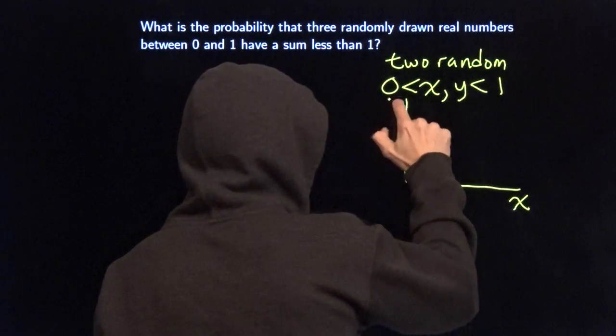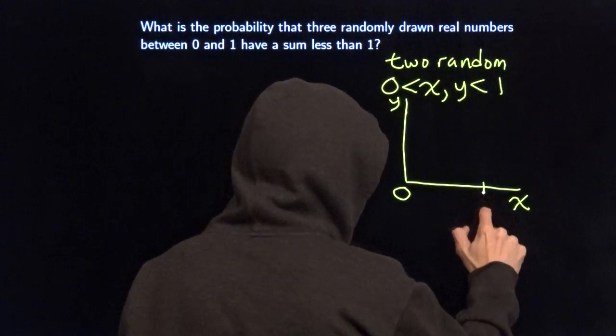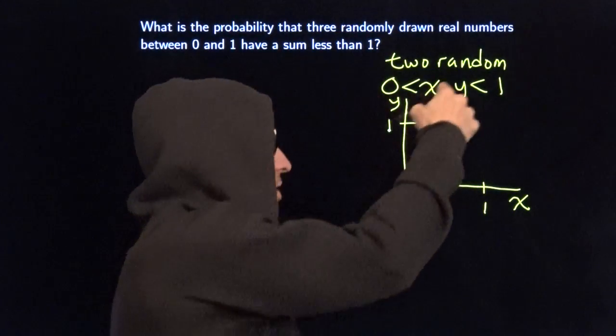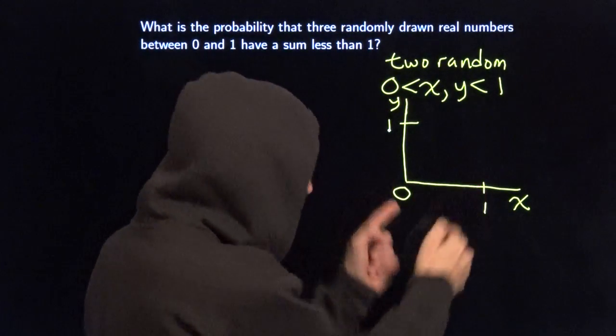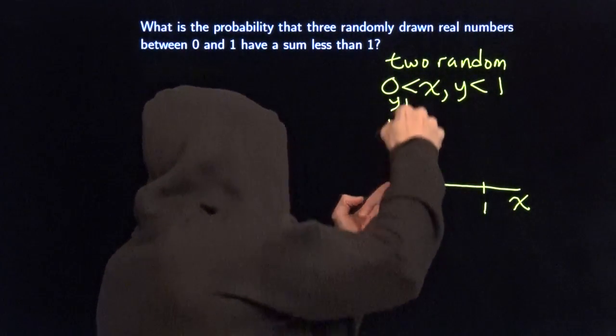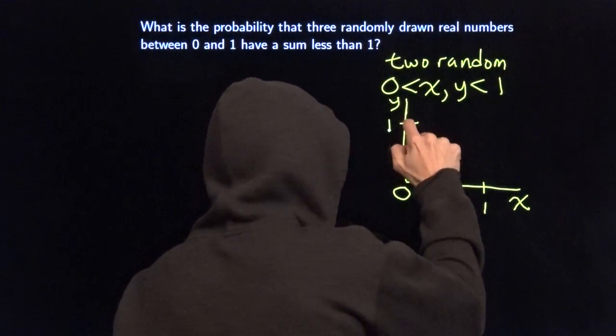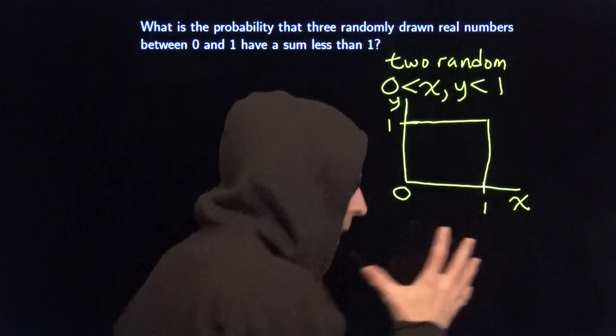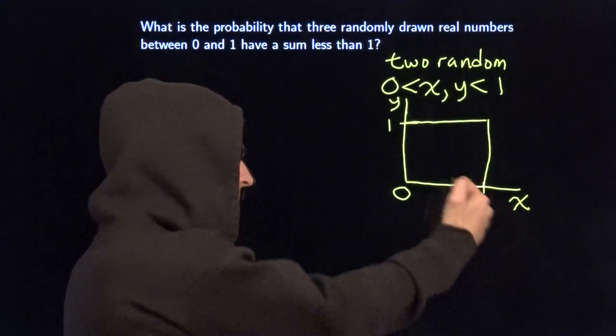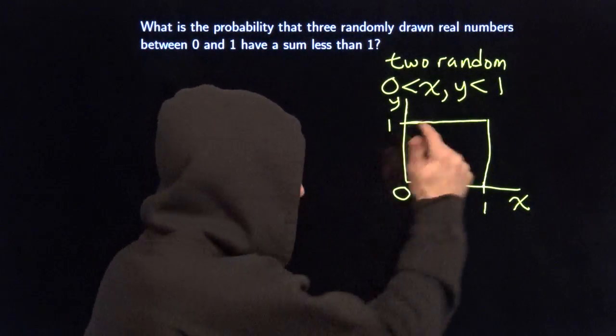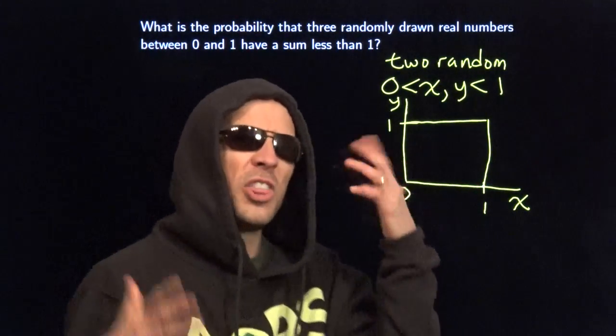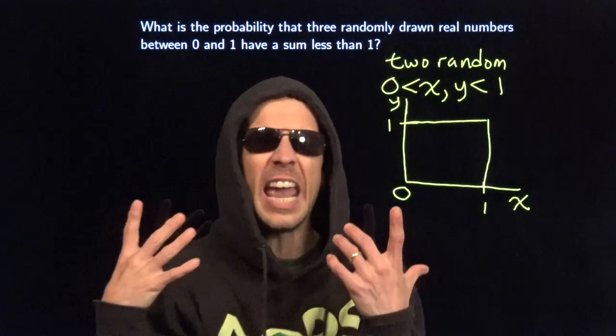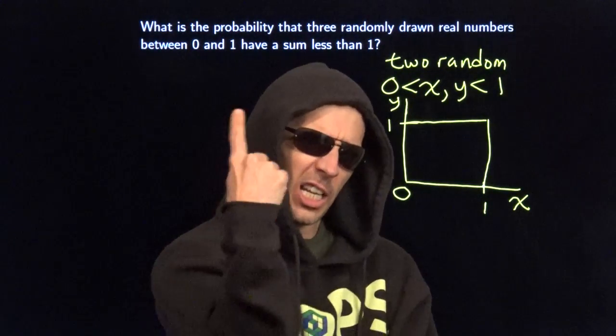Put X here. Put Y here. We're going to say this is zero. We'll call this one. We'll call this one. And this X and Y are between zero and one. That means X is between zero and one. That means Y is between zero and one. That means the combination of X and Y represents a point that is in this square. And we can measure that square with area. That square has area one. So we found the area of our possible region. It's one.